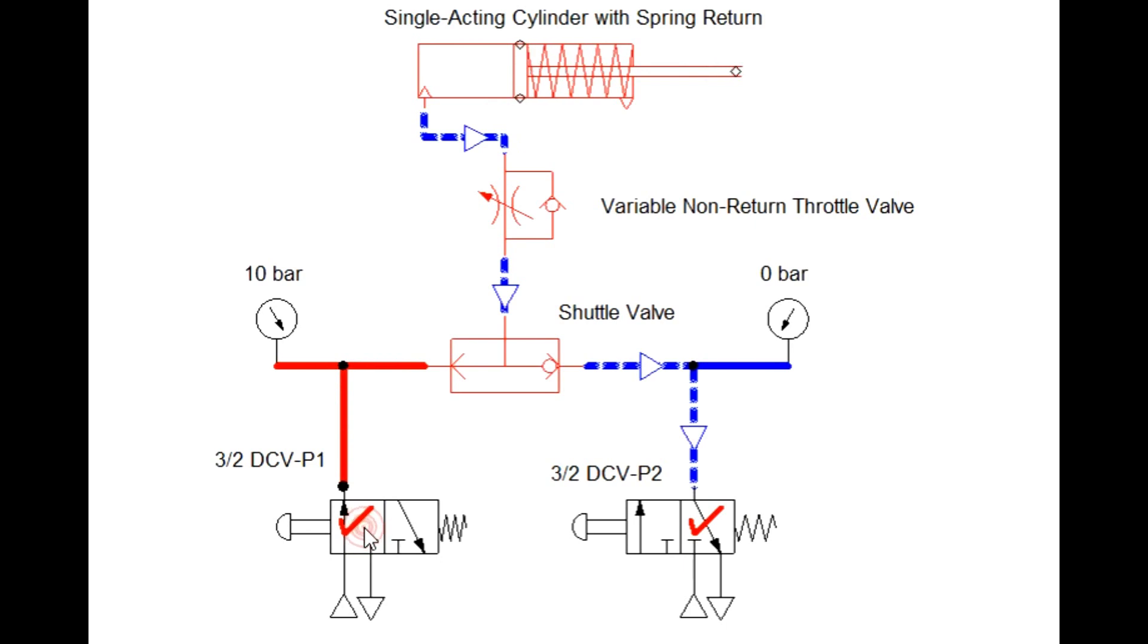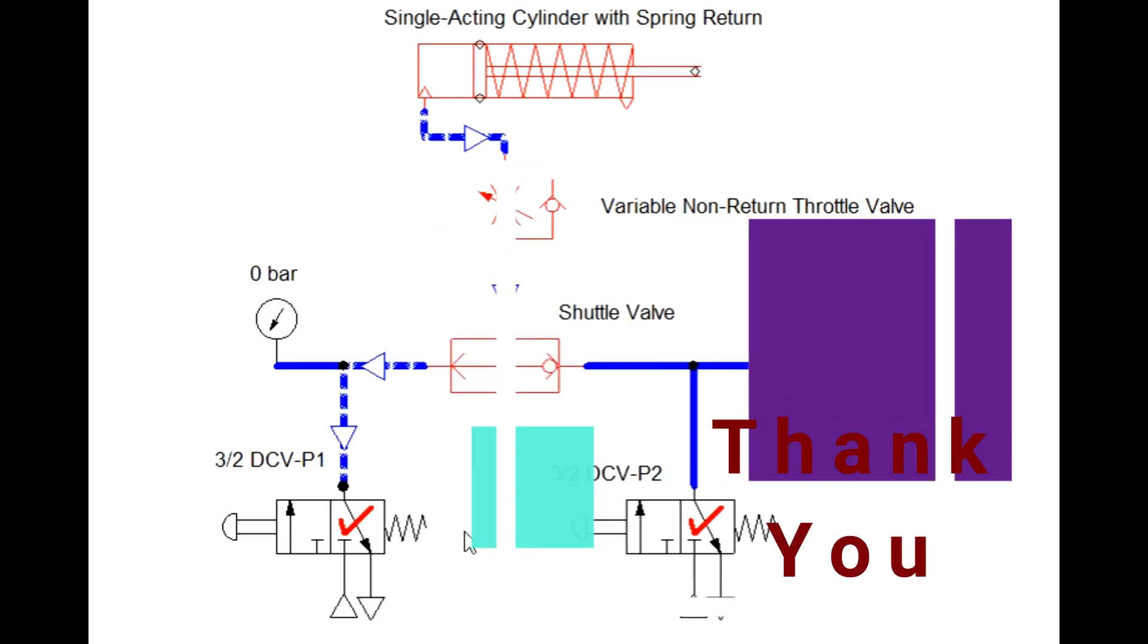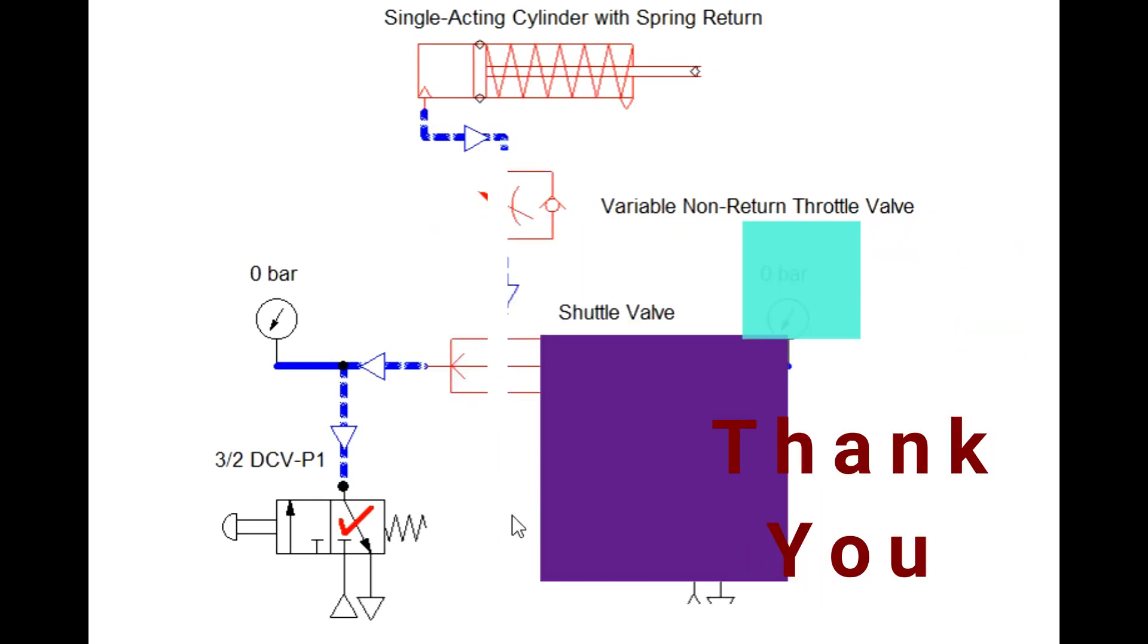If any one valve having first position actuates, cylinder starts to extend. But for the retraction, we have to actuate second position of both valves, then only your cylinder gets retracted. Thanks for watching this video.